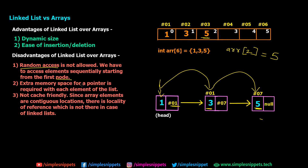Another drawback is that extra memory space for a pointer is required with each element in the list. With every node, we are storing two values: the actual value and the address. This address is extra overhead because values are not stored in contiguous memory locations like arrays. Lastly, linked lists are not really cache friendly. In arrays, elements are contiguously stored — there is locality of reference. In linked lists, nodes are placed anywhere in the entire memory, so traversing nodes gets really hectic.